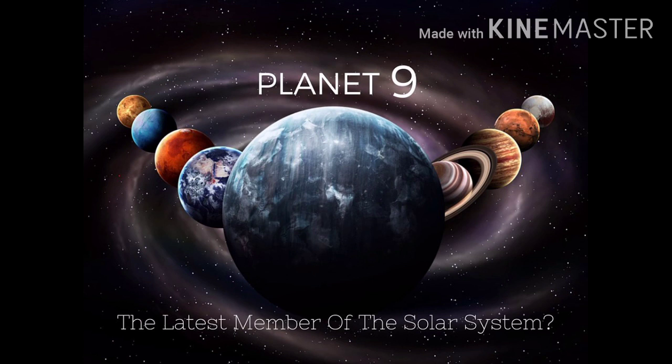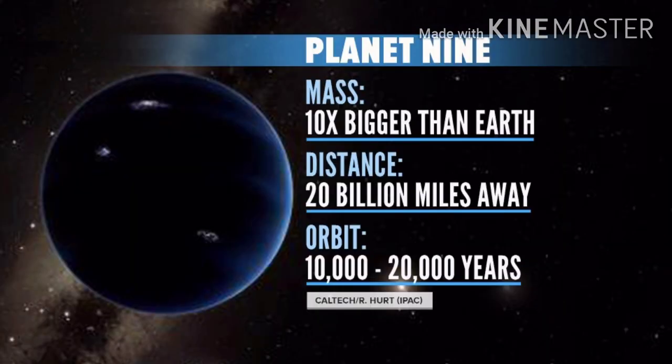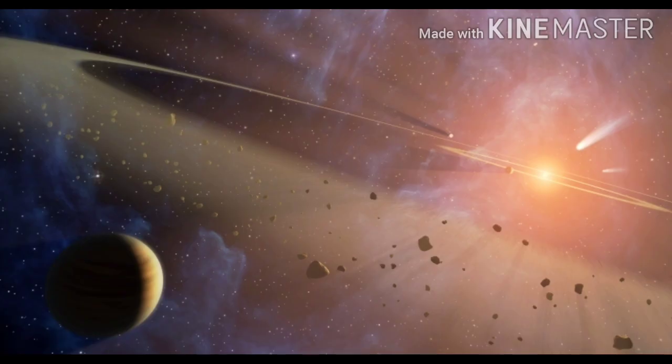Uranus's observed position differed from its predicted old position. Astronomers investigated the position of Uranus and its orbital struggles. Earth-like bodies were thought to be working on an object spanning the planet, and calculations suggested perturbations of 15 to 30 degrees.